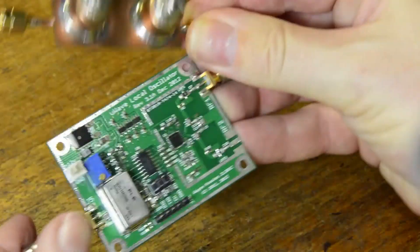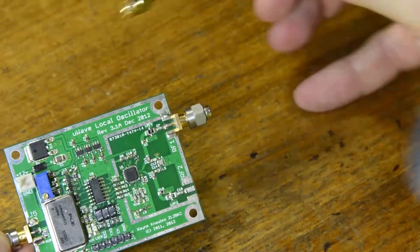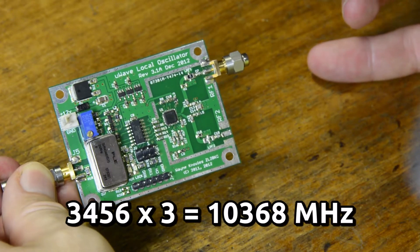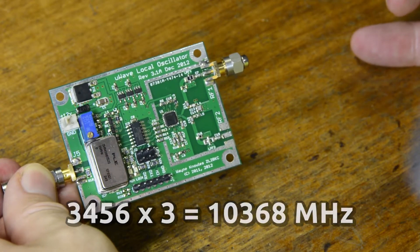It's very easy to generate using a PLL board like this one which I have set to working at 3,456 megahertz which is one-third of where we need to be.